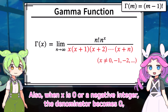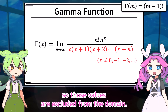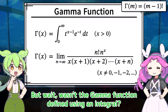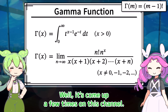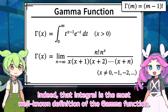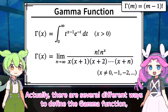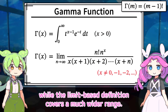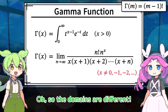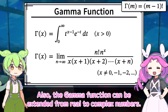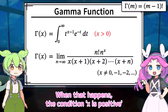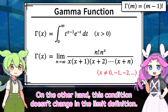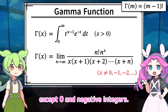Also, when x is 0 or a negative integer, the denominator becomes 0, so those values are excluded from the domain. For all real x except those, this limit is known to converge. There are several different ways to define the gamma function, and they all give the same values. The integral definition only works for positive x, while the limit-based definition covers a much wider range. The gamma function can also be extended from real to complex numbers — in the integral definition the condition becomes that the real part of x is positive, while in the limit definition this condition doesn't change. This limit converges for all complex numbers except 0 and negative integers.